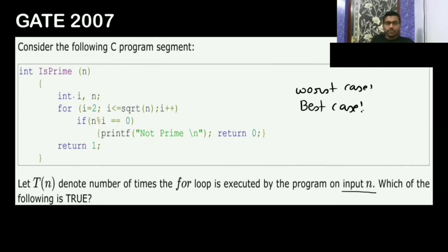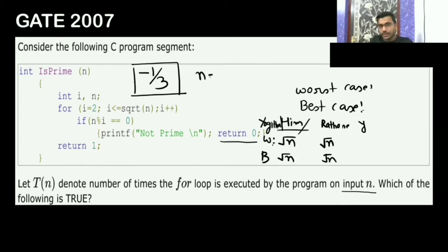So given this code, they are asking what is the best case and worst case. Let us assume 2 power 10. I am assuming 2 power 10, that is 1024. If 1024 mod 2, i is going to 2, is equal equal to 0. Yes.